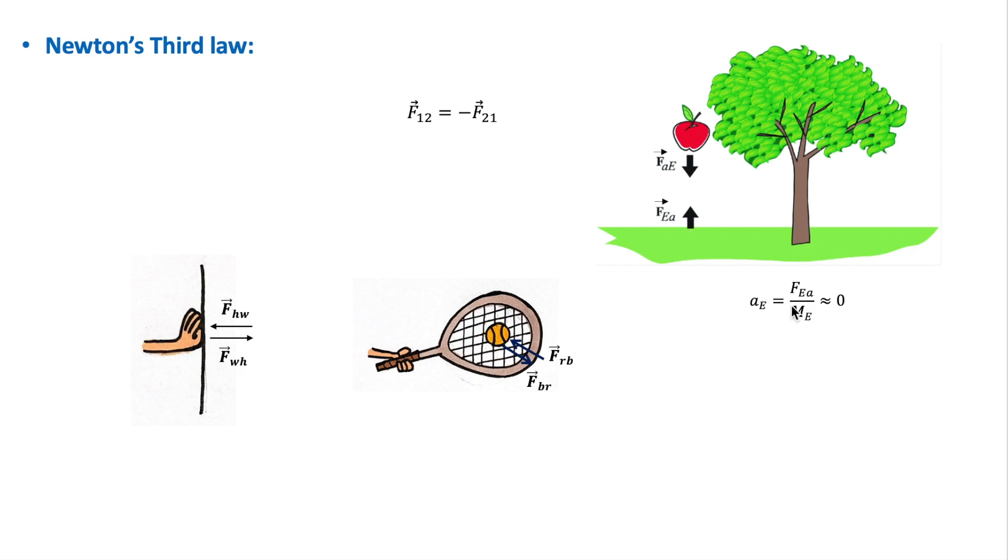And because the mass of the earth is so large, it will not accelerate towards the apple because the acceleration of the earth due to this force is approximately zero.